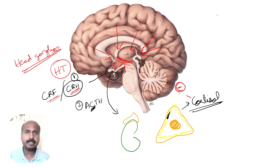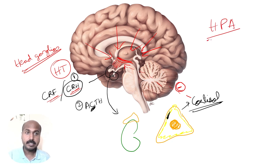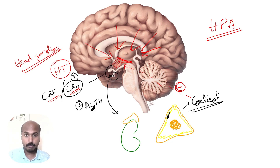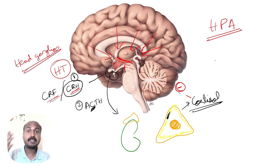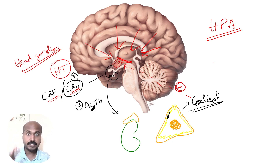This is a normal healthy HPA axis, but the HPA axis is prone to dysfunction. It can be overactive or underactive. If it acts less, cortisol release will be impeded, causing HPA axis dysfunction.